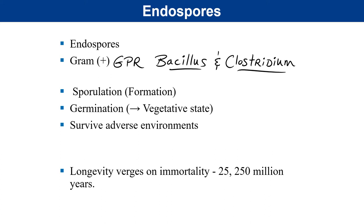Sporulation is the process by which an active bacterium enters a dormant state to escape impending doom. If an organism senses that nutrients are running out, or there is a life-threatening condition like dehydration or drastic change in pH or temperature, it can pack up its cytoplasmic contents, ribosomes, cytoplasmic proteins, duplicate its DNA, and form a spore around them.